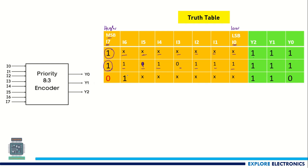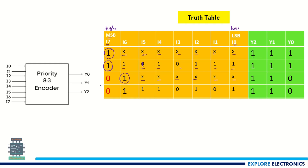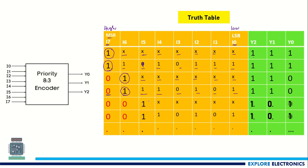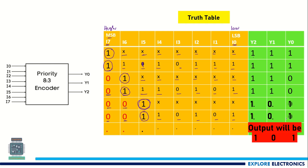If the MSB is 0, the encoder looks at i6. If i6 is equal to 1, it will not look at any other lower priority values — inputs i5 to i0 can be 0 or 1 — and the output will be encoded to 110. Similarly, the next priority is given to i5. For i5 to be considered, i7 and i6 must both be 0. Then irrespective of the lower priority inputs, the output will be encoded to 101.